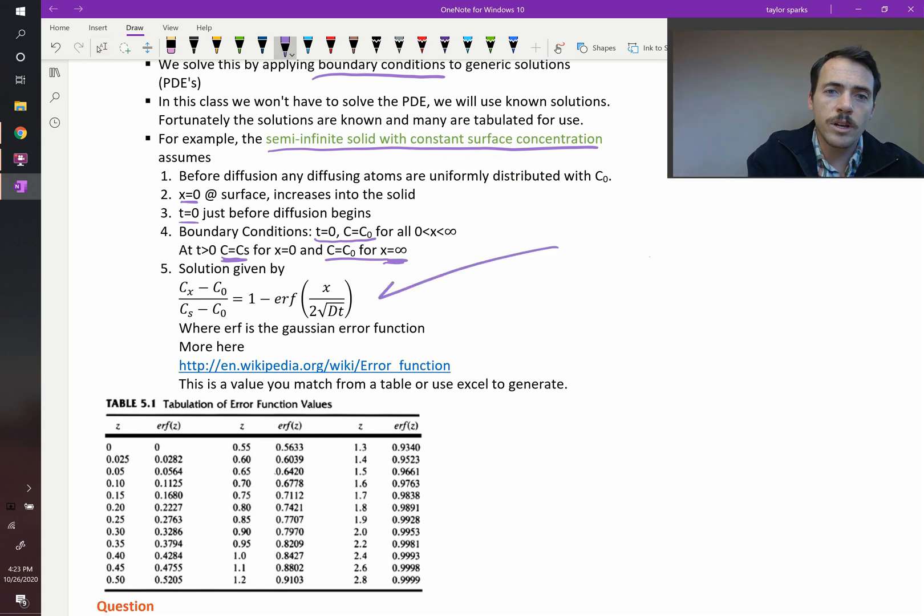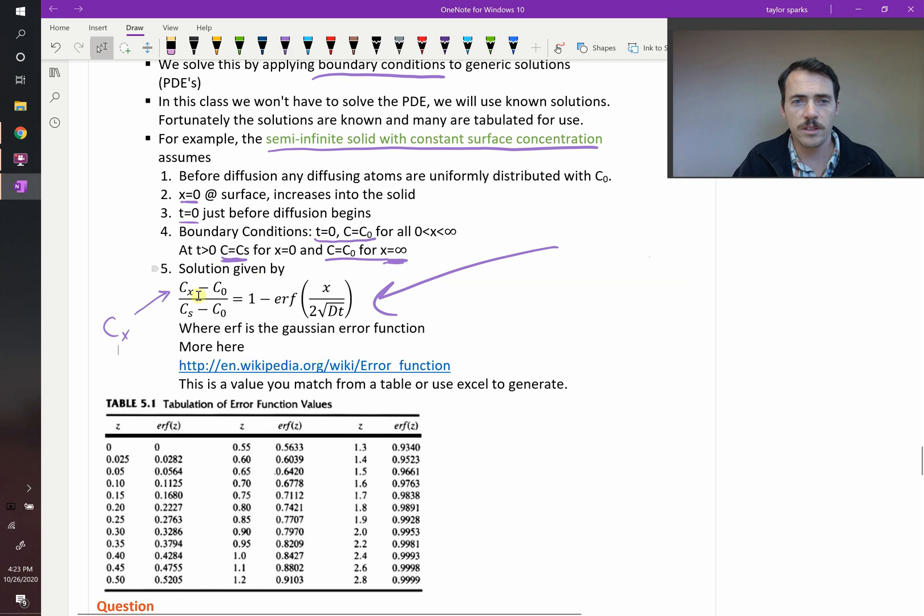If those conditions are met, this is the equation we use right here. You can solve for the composition at any position x, that's cx. The composition at any position x will be given by this expression here. You need to know c0, your initial composition all the way through, or concentration all the way through, the surface concentration cs, you're going to have to use the error function and know what the diffusion coefficient and time are. If you know all those things, you can solve for it.